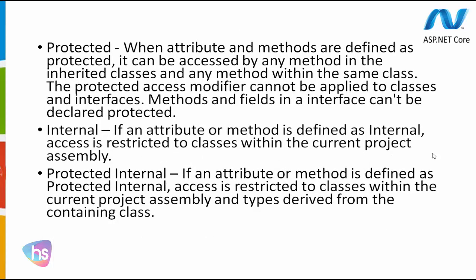When attributes and methods are defined as protected, they can be accessed by any method in the inherited classes and any method within the same class. The protected access modifier cannot be applied to classes and interfaces — methods and fields in an interface cannot be declared protected. If an attribute or method is defined as internal, access is restricted to classes within the current project assembly. If defined as protected internal, access is restricted to the current project assembly and types derived from the containing class.